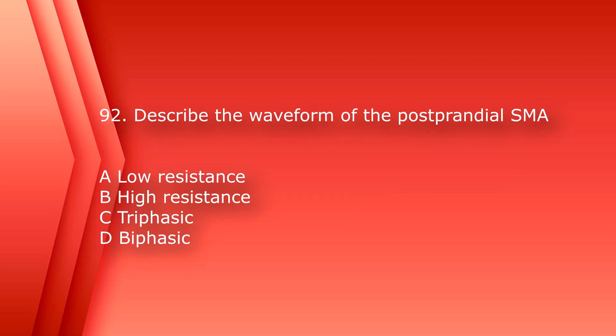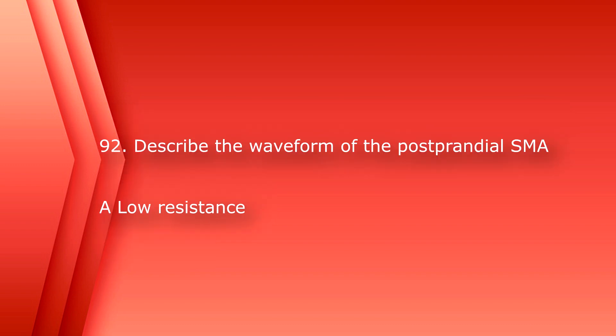Number 92: describe the waveform of the postprandial SMA. A. Low resistance. B. High resistance. C. Triphasic. Or D. Biphasic. The answer is A. Low resistance. Before a meal, the SMA flow can be high resistance.